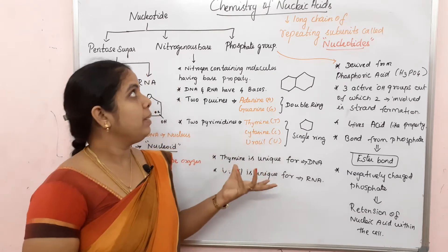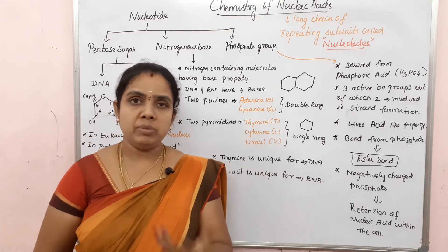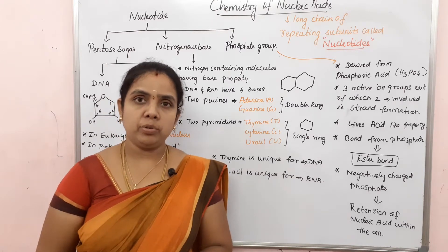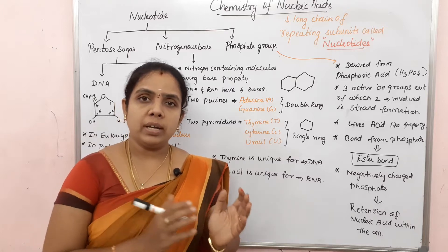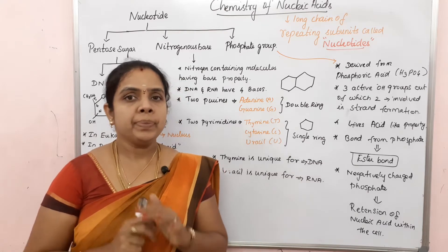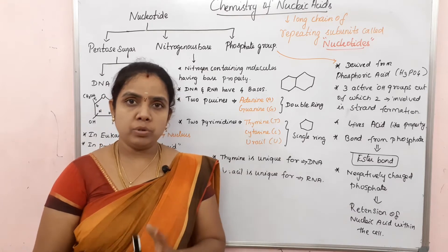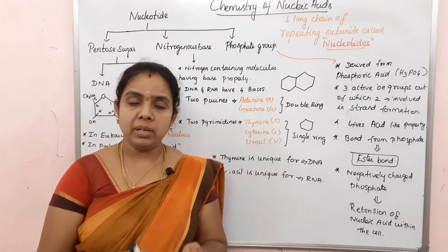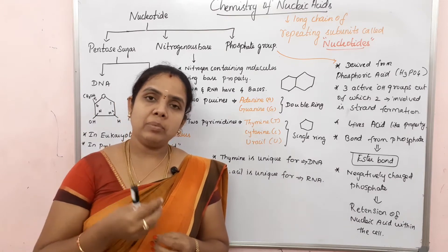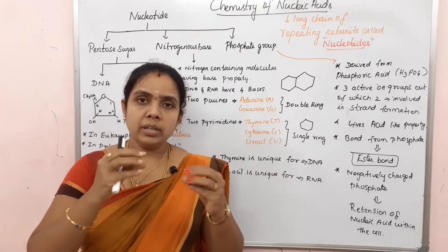Now what we have to tell is the chemistry of nucleic acids. For example, water is H2O - hydrogen and oxygen - so it is a chemical molecule. Similarly, DNA and RNA are called genetic material. They are molecules made of subunits.